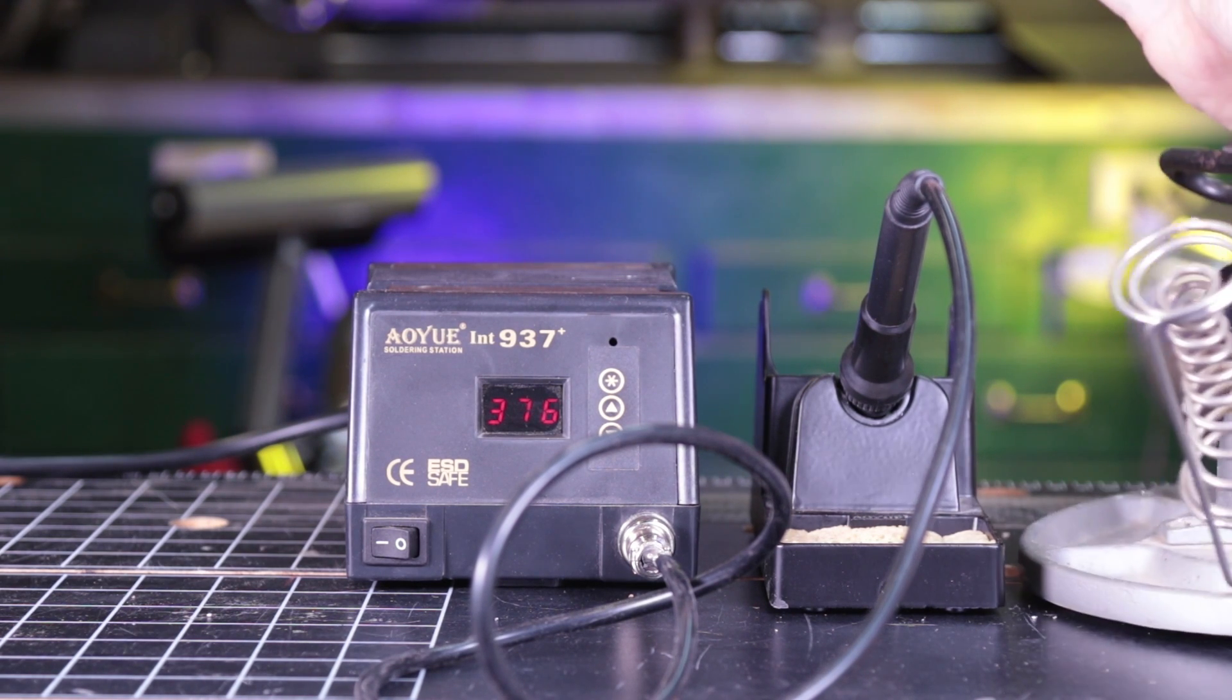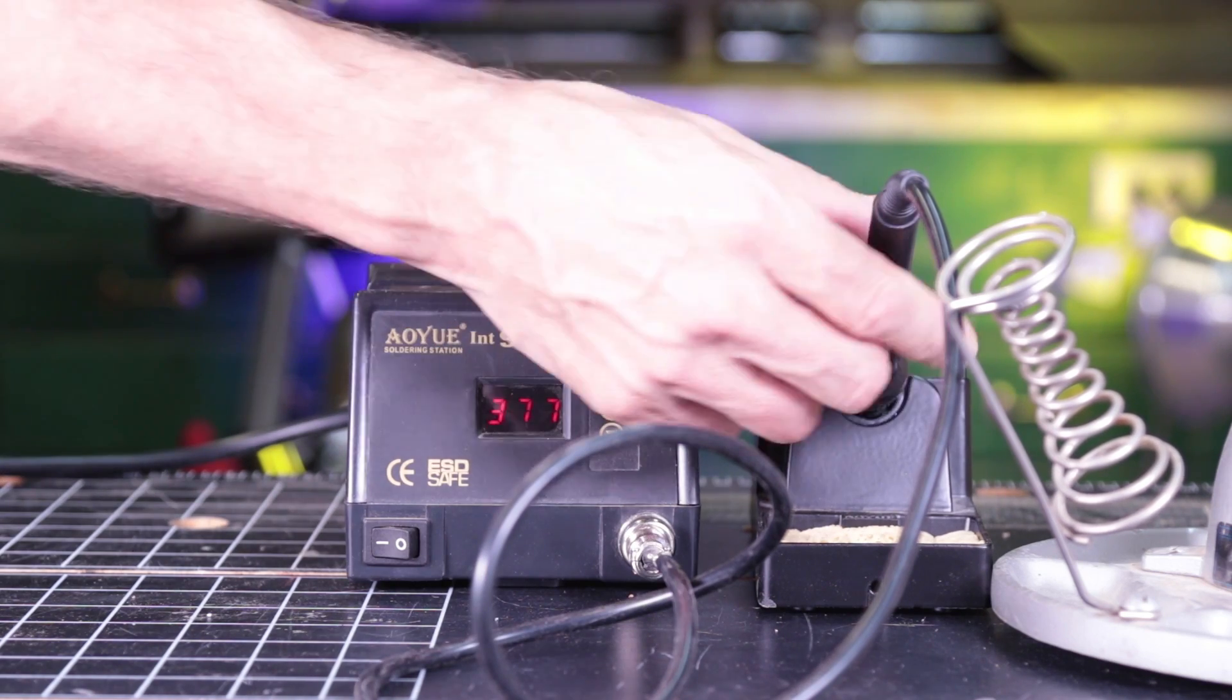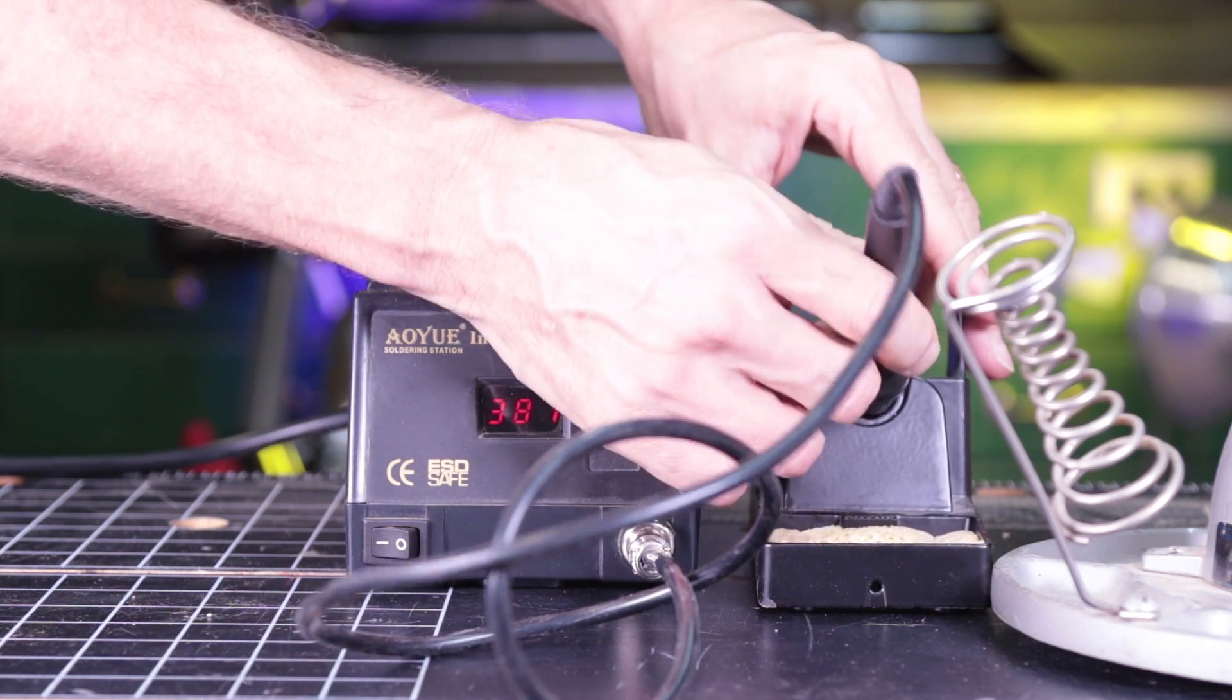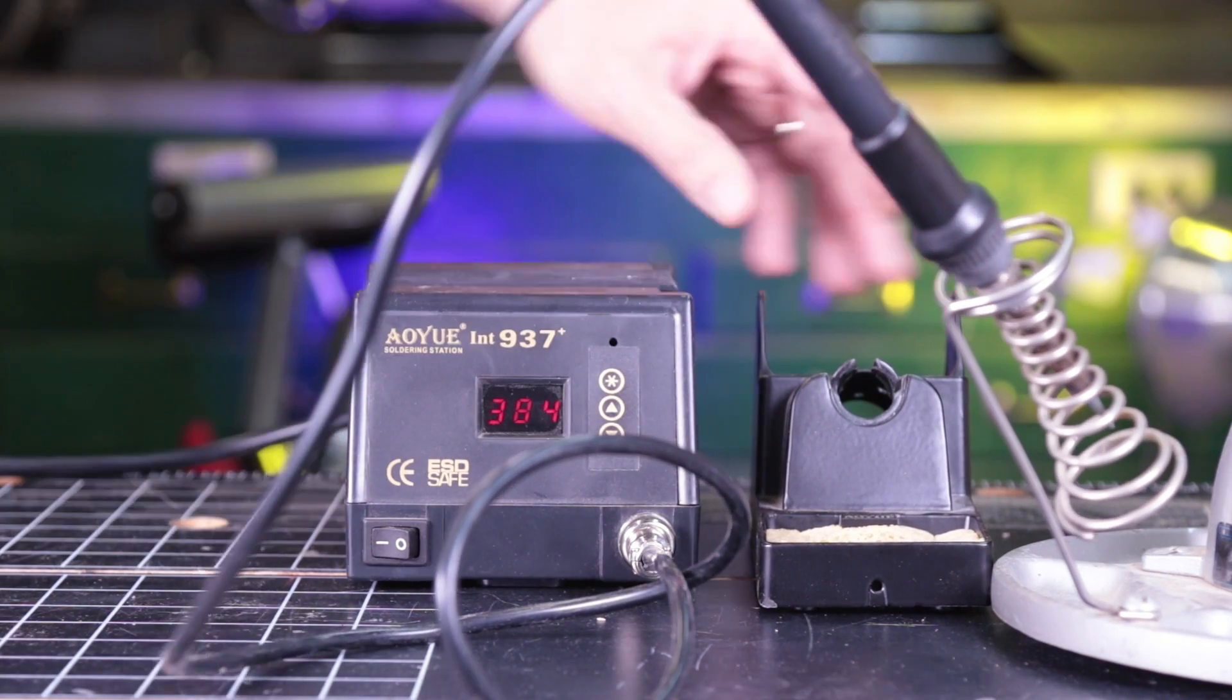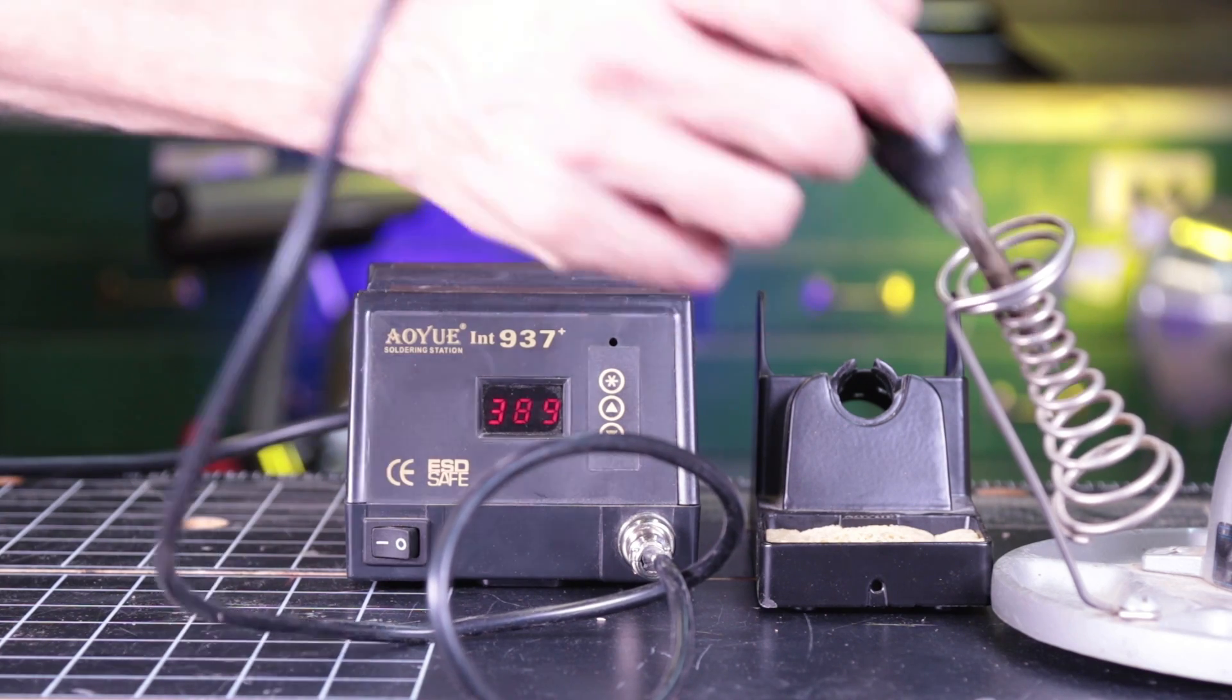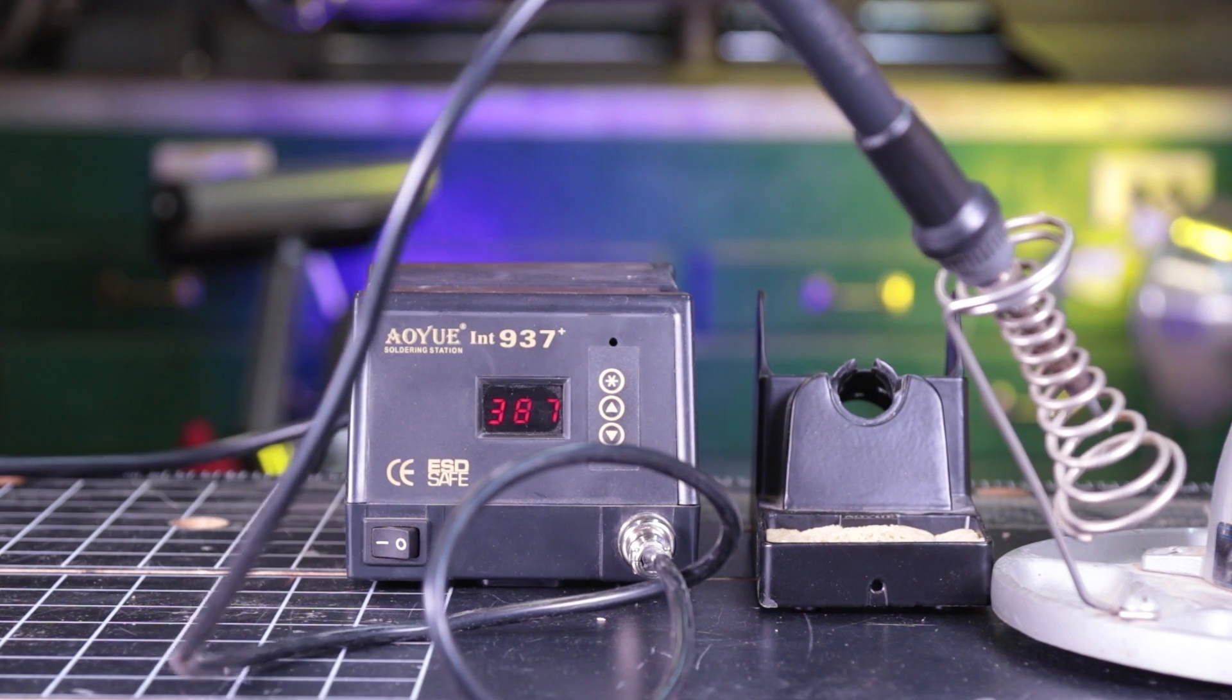One thing I don't like about it is this base. It's pretty lightweight and moves around pretty easily. Also the soldering iron is kind of touchy in terms of how it fits in there - it's easy for it to not get in there quite right. So I'm not a big fan of this little base. A lot of times I'm using this PanaVise for my projects and it has its own soldering iron holder. If I'm using this I just use that instead. It's a whole lot more convenient.